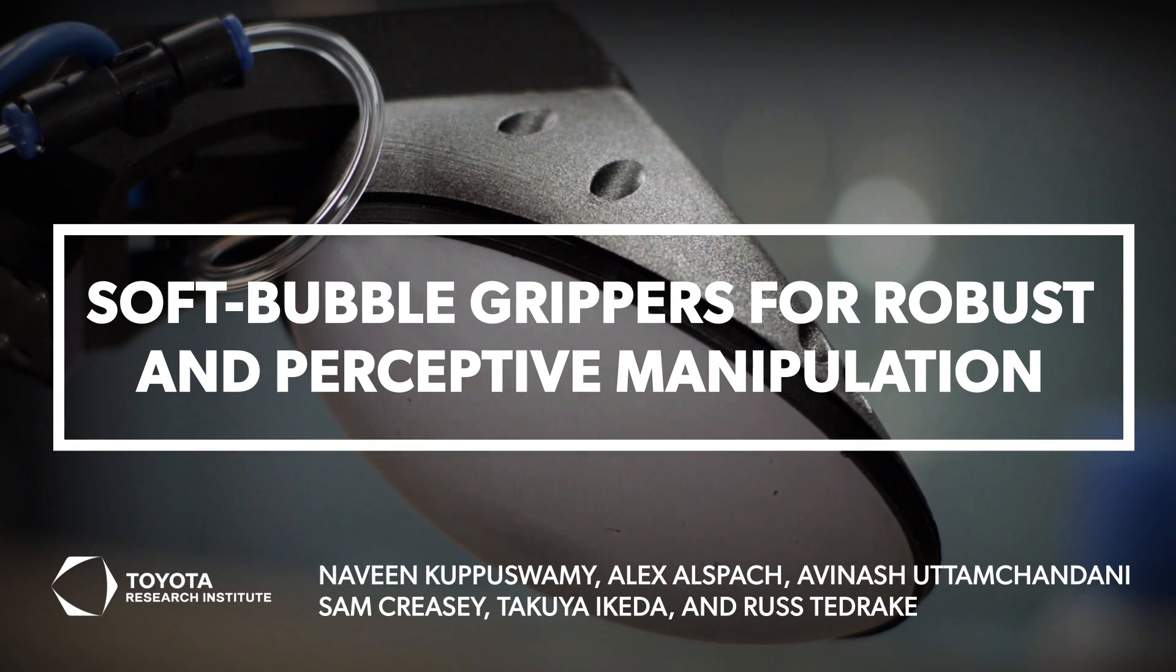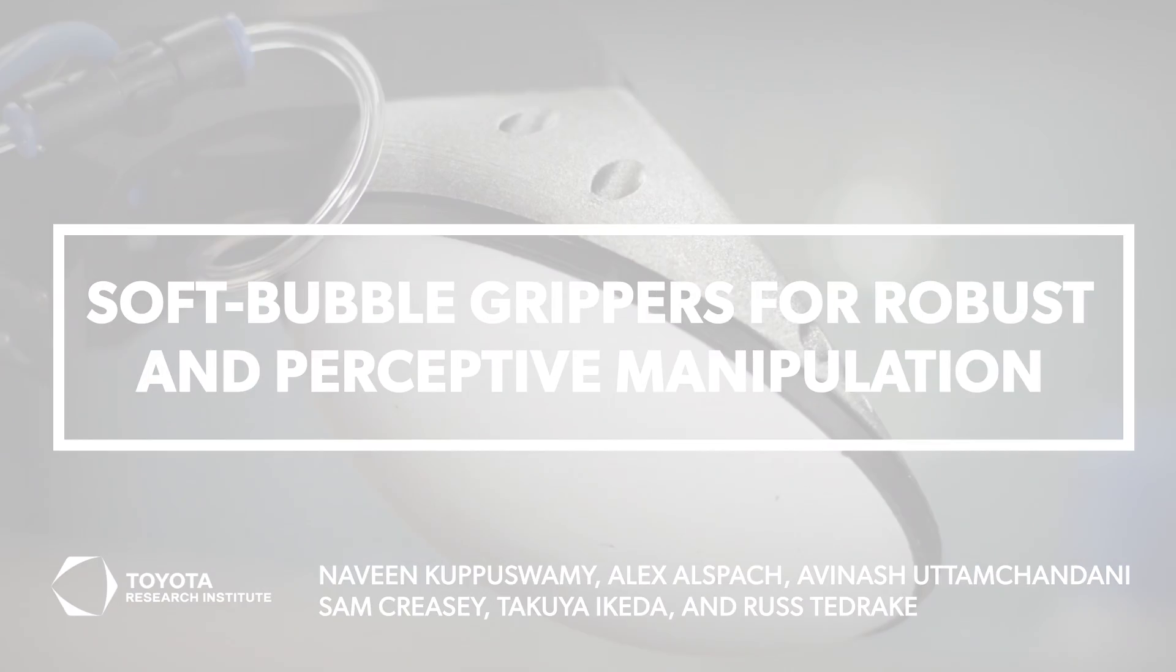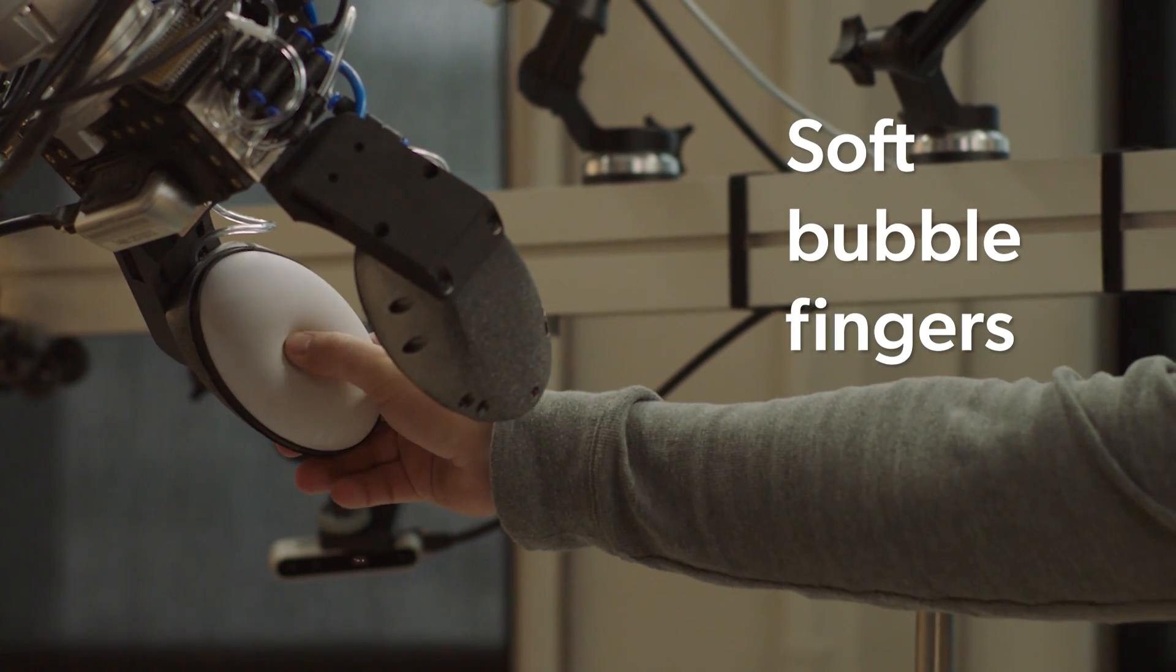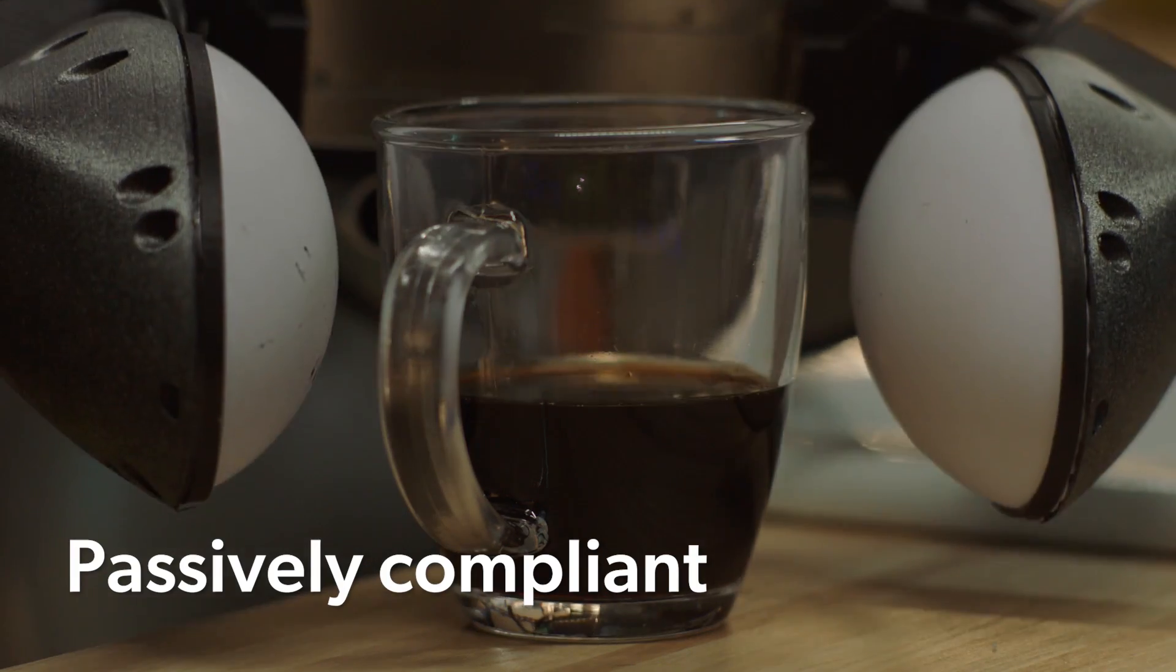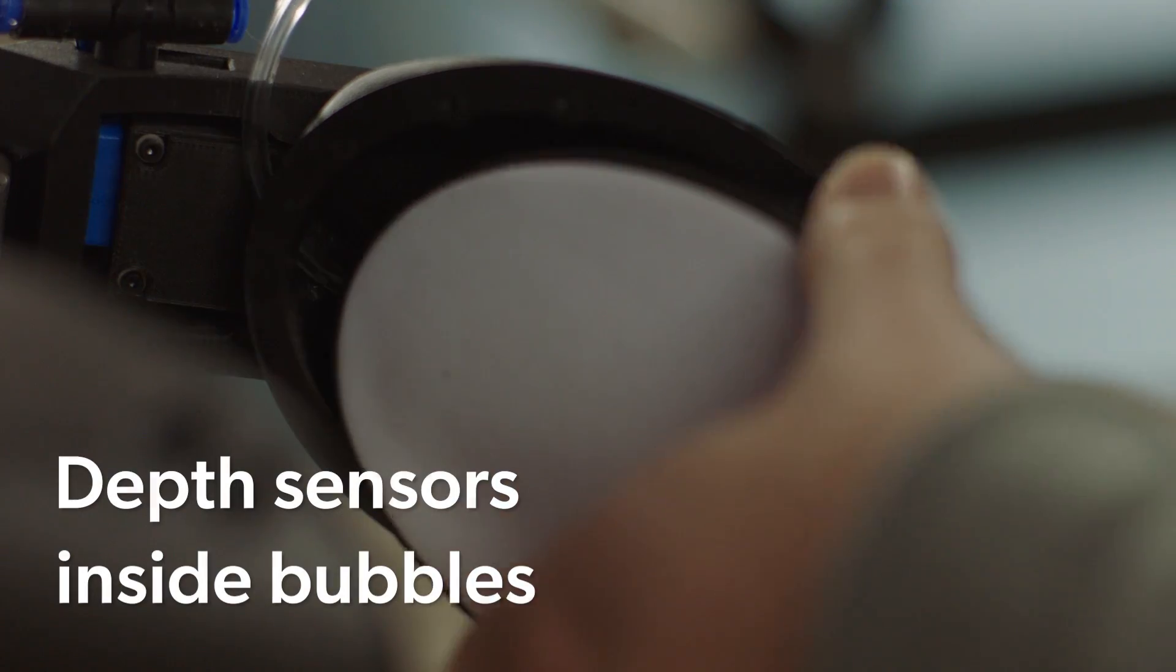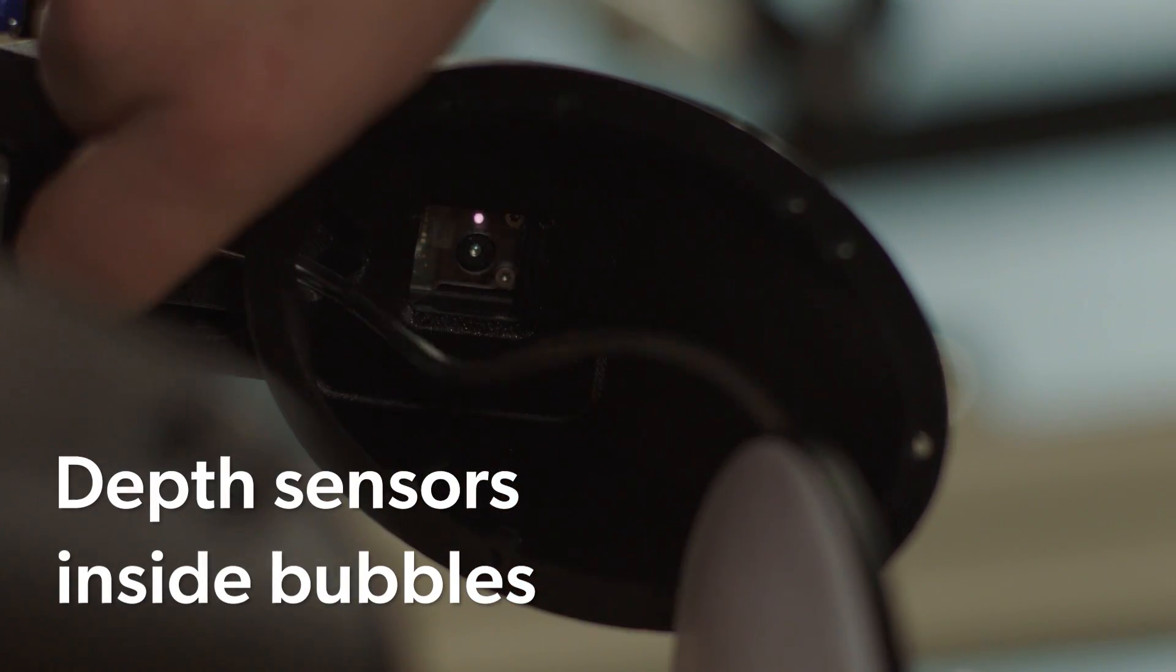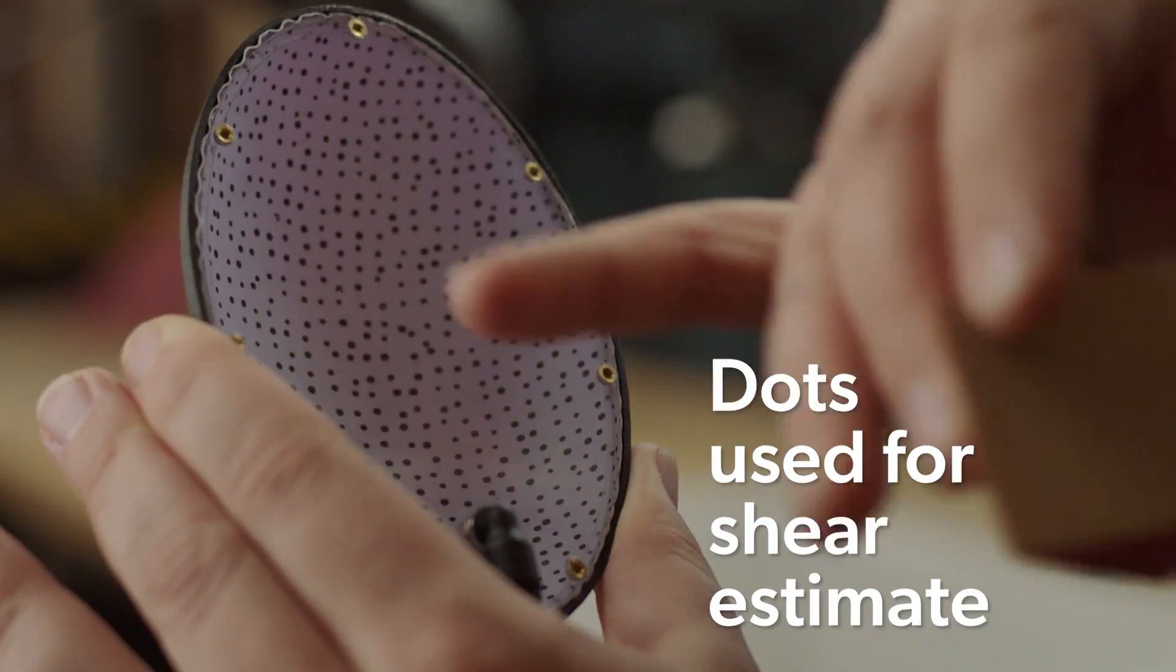Manipulation in cluttered home environments can benefit from flexible end effectors with embedded sensing. We present the SoftBubbleGripper system with a highly compliant and durable gripping surface, integrated depth and IR cameras, and customizable internal markers for visual tracking.